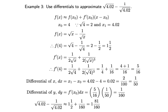Hence, √4.02 − 1/√4.02 ≈ 1½ + 1/160 = 81/160. Thank you.